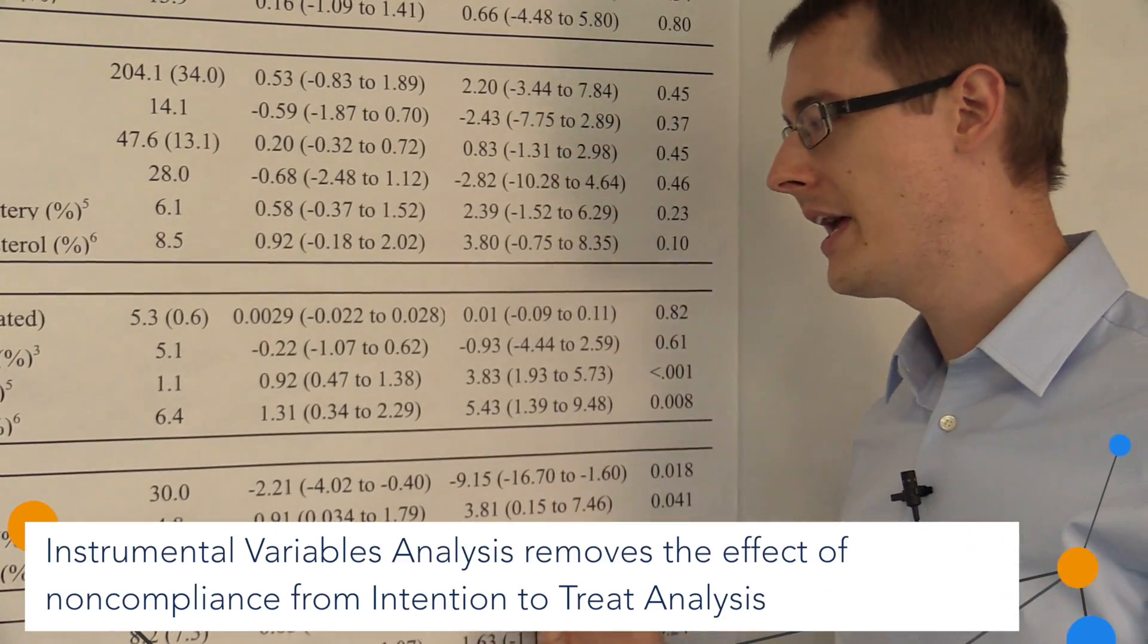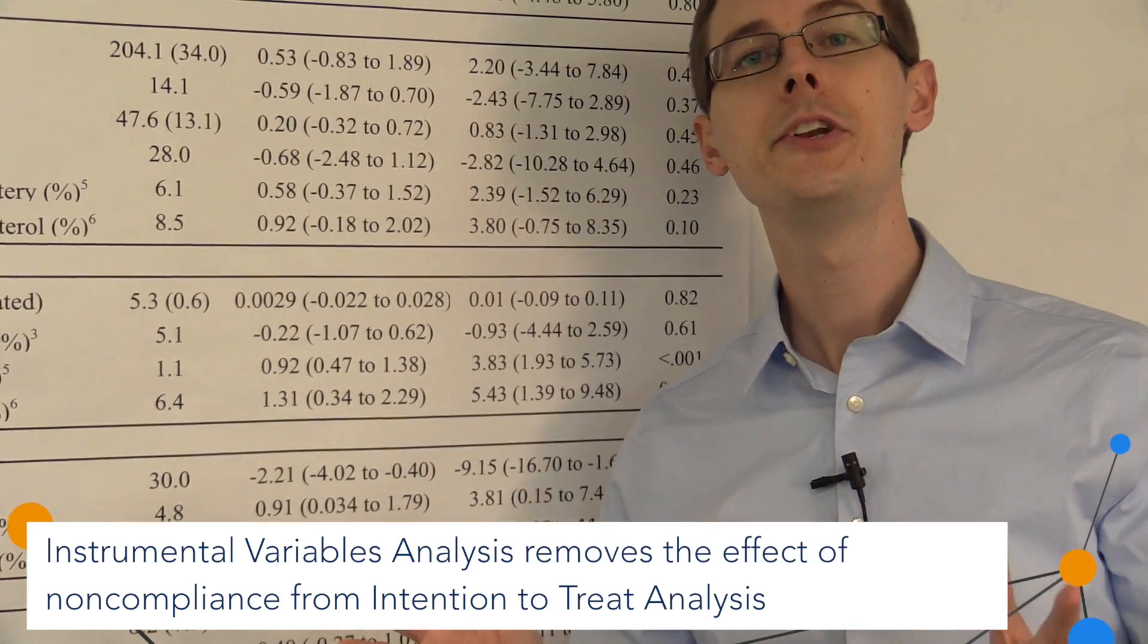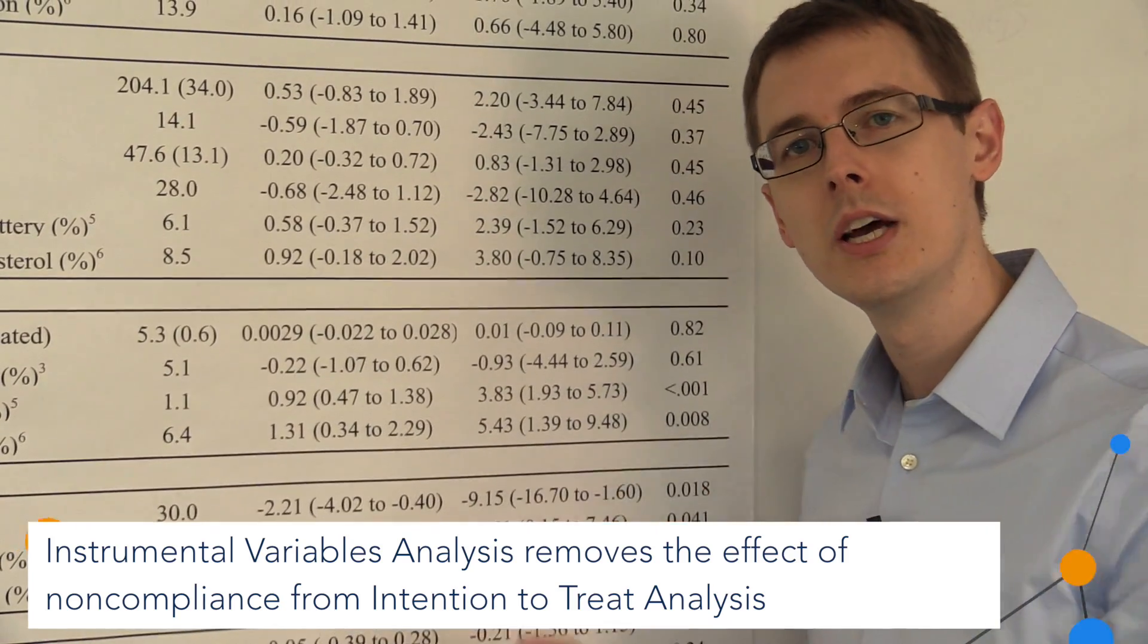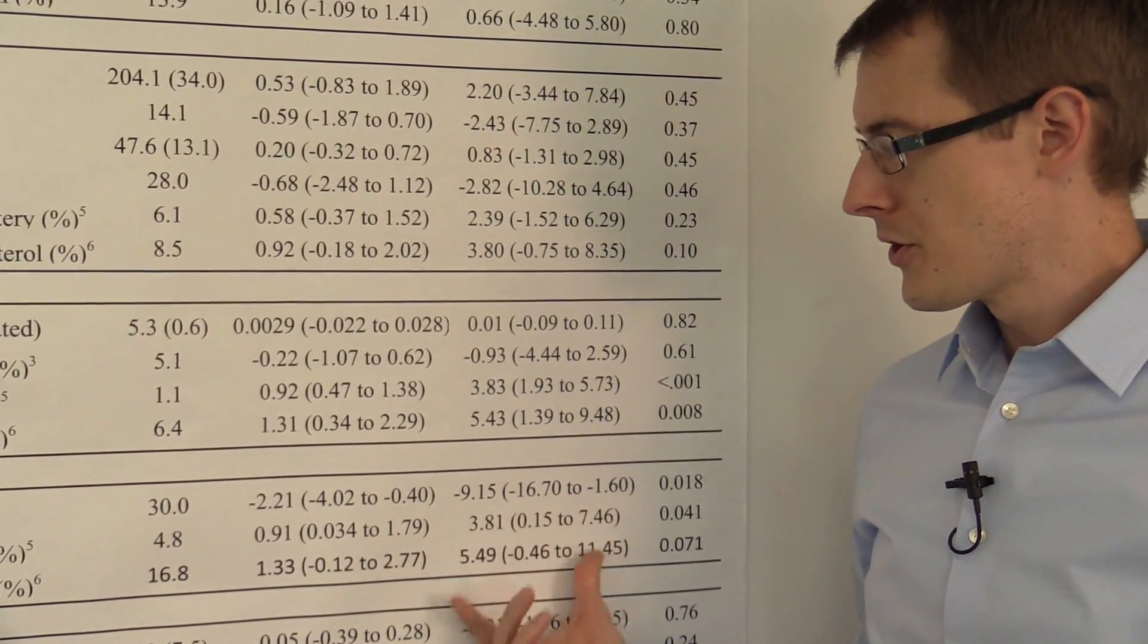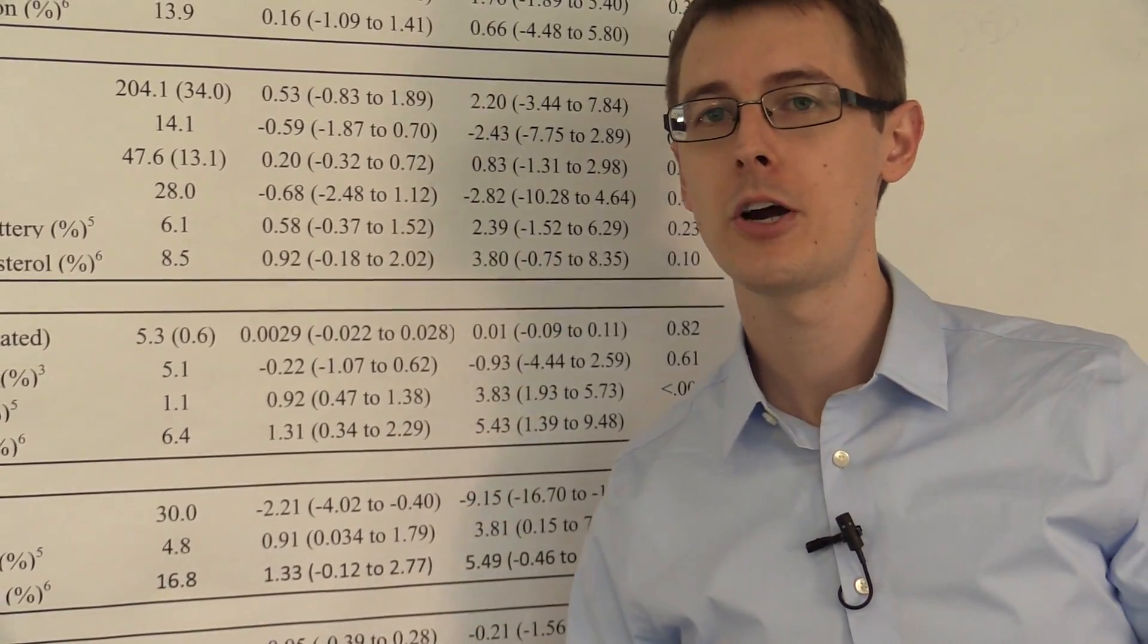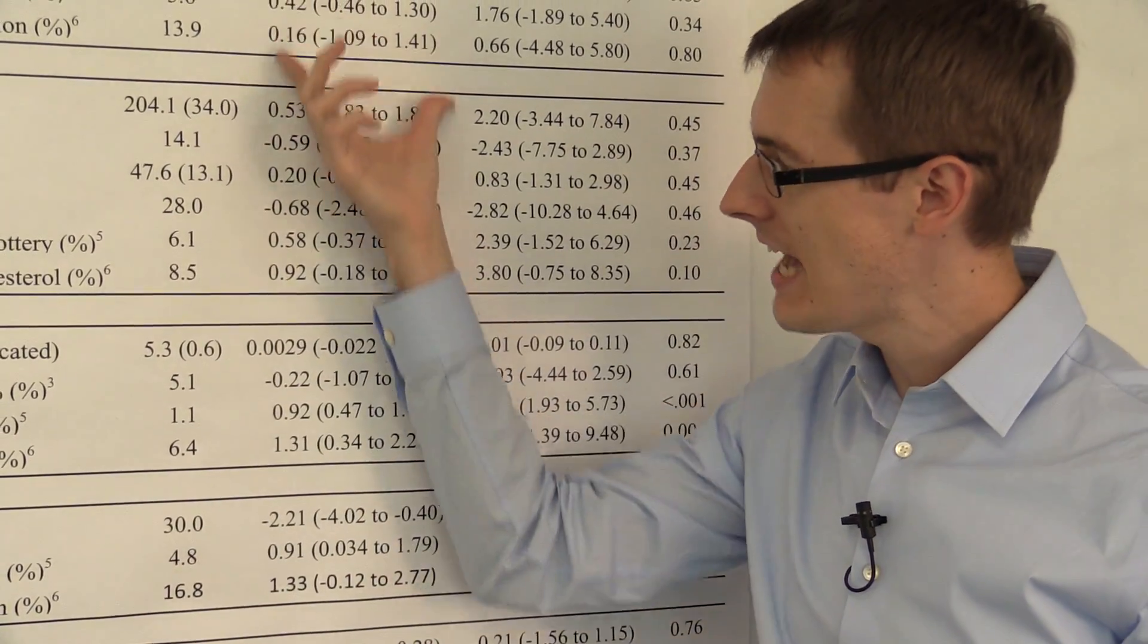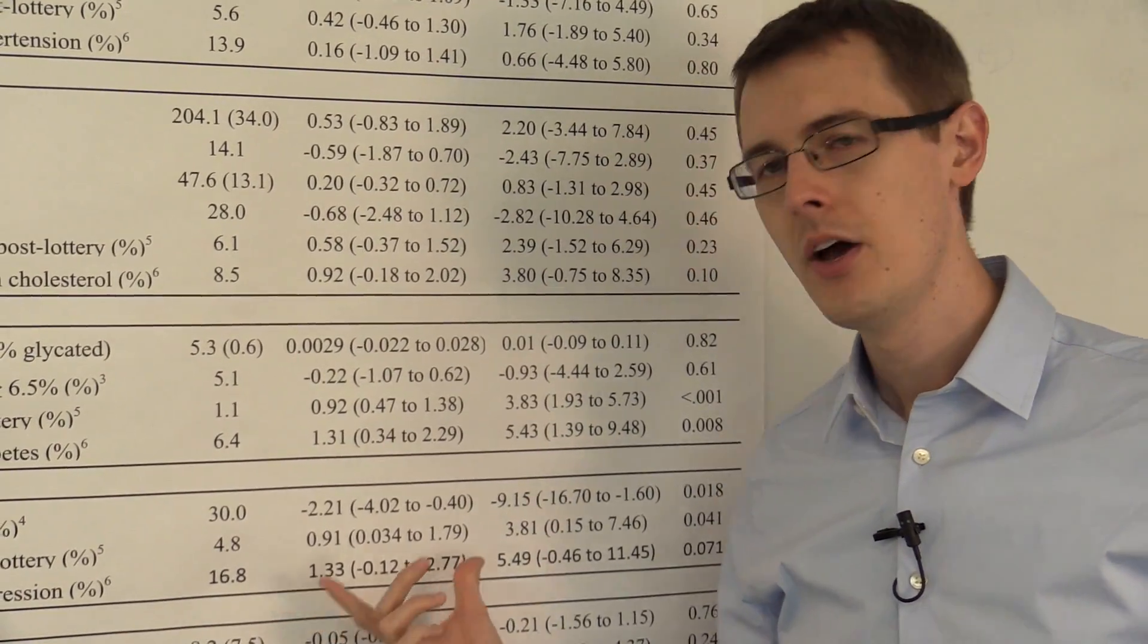Another way to think about this difference in magnitude is to remember how the indirect inference estimator works. Now, that's not how we got these numbers, but the intuition is basically the same. The indirect inference estimator starts by looking at the correlation between the outcome variable and the instrument. Well, that's actually exactly what this column here shows us, the intention-to-treat analysis.